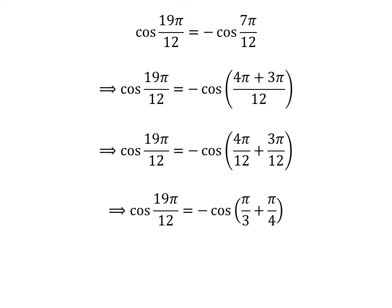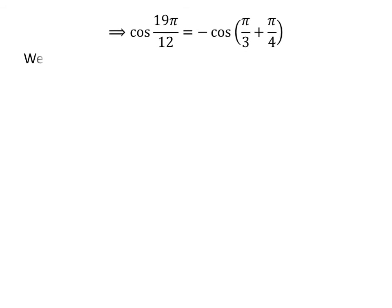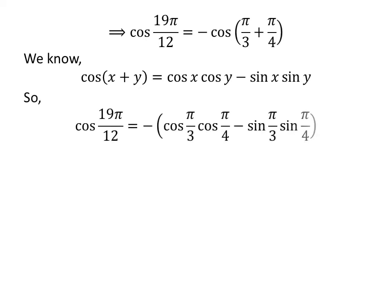So, cosine of 19 times pi upon 12 is equal to minus cosine of pi upon 3 plus pi upon 4. We know the cosine addition identity: cosine of (x + y) is equal to cosine of x times cosine of y minus sine of x times sine of y. Applying this identity gives us cosine of 19π/12 is equal to minus of cosine of pi upon 3 times cosine of pi upon 4 minus sine of pi upon 3 times sine of pi upon 4.